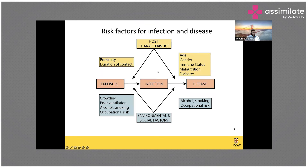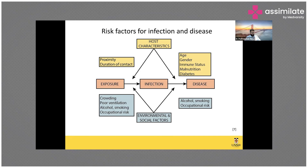There are many risk factors for TB infection and disease. Key factors include proximity and duration of contact — health workers and household contacts are at very high risk. Other risk factors include extremes of age (children and the elderly), gender (males have a higher chance of active TB due to greater mobility and health-seeking behavior), immune status, malnutrition, and diabetes. These all increase the chance of progressing from exposure to infection to active disease.